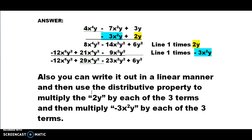If you tried to work this, then the first thing that you did was take the 2y times everything on the top row. You should have ended up with 8x to the 4th y squared minus 14x squared y squared plus 6y squared. And then you're going to take the minus 3x squared y and multiply it by every term on the top row, and that would give you this corresponding line right here.